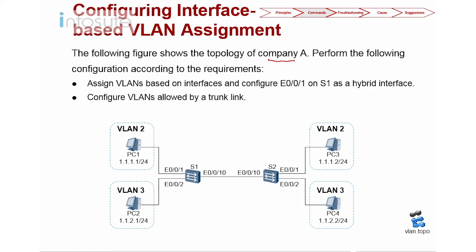Let's look at the requirements and topology for our lab. This is Company A — perform the configuration below. There are two requirements. First, assign the VLAN based on interface: E001 on S1 will be configured as hybrid. Second, configure the VLAN allowed by a trunk — E0010 will be configured as a trunk. We have VLAN 2 and VLAN 3, and the port here will be on hybrid. Let's jump to the lab now.